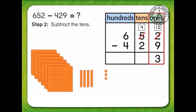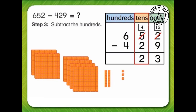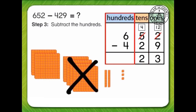Next, subtract the 10s. There are 4 tens. 4 minus 2 equals 2. Finally, subtract the 100s. 6 minus 4 equals 2.